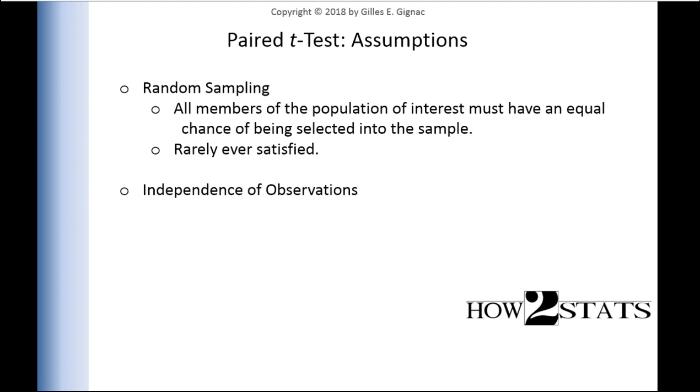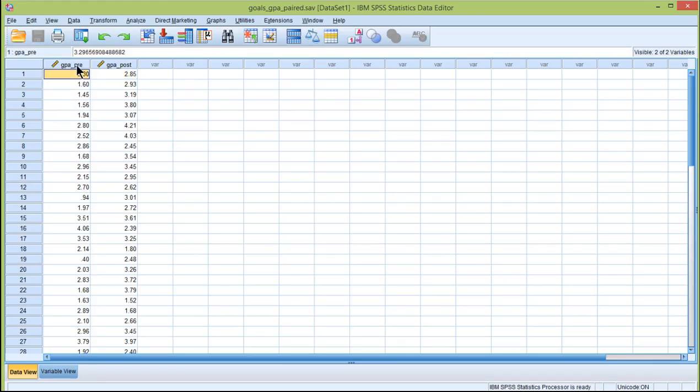Another assumption is independence of observations. It's easy to confuse that one in the paired sample t-test case because paired data are obviously not independent. By that I mean there's usually a correlation, a positive one, between the scores at time one and the scores at time two in a within-subjects design. Somebody who does well at uni in semester one is probably going to do well at uni in semester two, so you get a positive correlation between the scores. And that's fine.